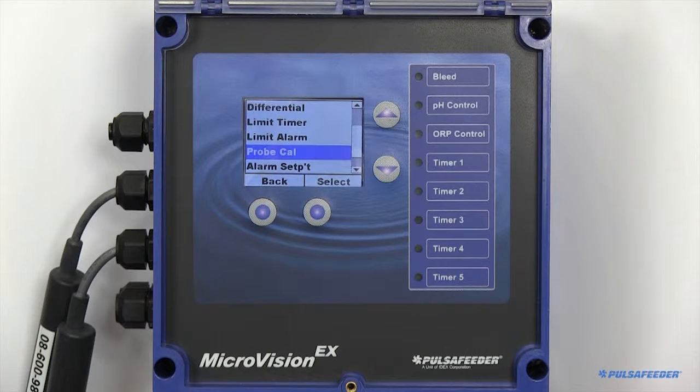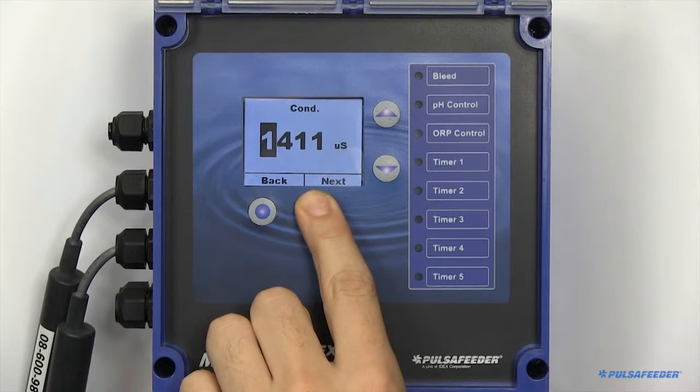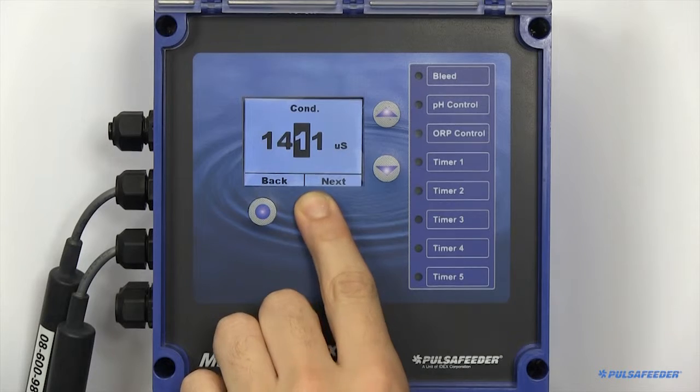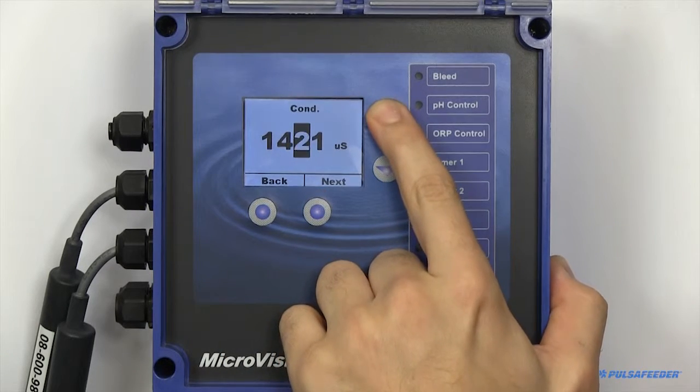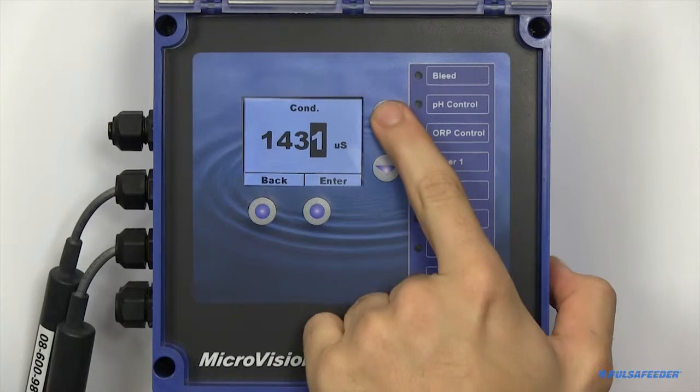Calibration of your probes is also essential. Some things to remember is that temperature fluctuations can affect some readings. Make sure the probes are in the desired solution for a minimum of 10 minutes. If using a handheld to calibrate, also make sure the handheld has temperature compensation.